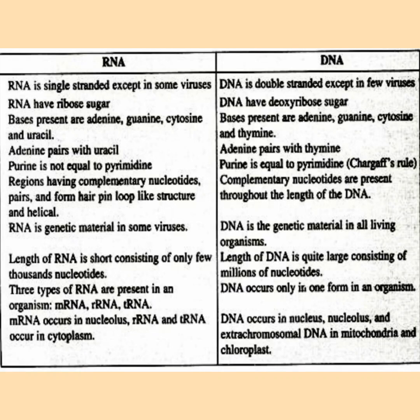In RNA, purine is not equal to pyrimidine. In DNA, purine equals pyrimidine according to Chargaff's rule. Regions having complementary nucleotides pair and form hairpin loop-like helical structures. Complementary nucleotides are present throughout the length of the DNA. RNA is the genetic material in some viruses; DNA is the genetic material in all living organisms. The length of RNA is short, consisting of only a few thousand nucleotides, whereas the length of DNA is quite large, consisting of millions of nucleotides.